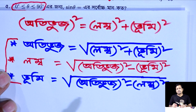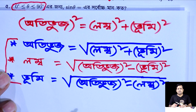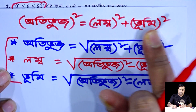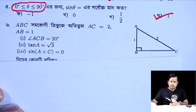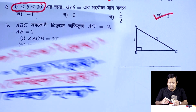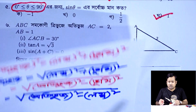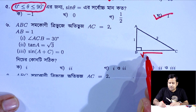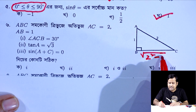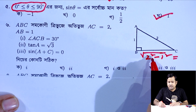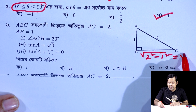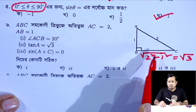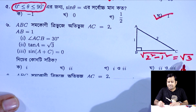We calculate: 2 squared minus 1 squared equals 4 minus 1 equals 3. So root 3 squared plus 1 squared gives BC. That means BC is equal to root 3. We write down: BC is equal to root 3.